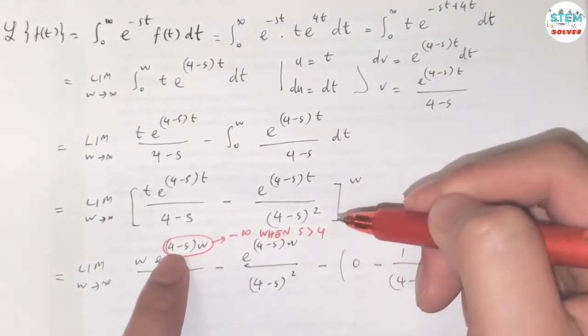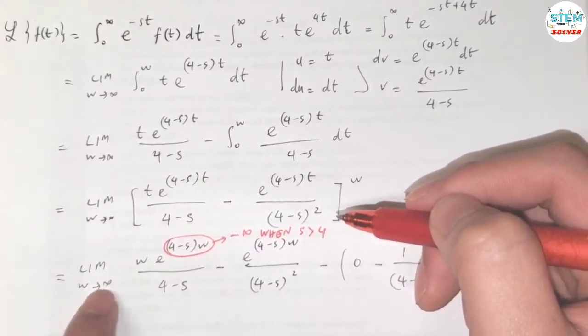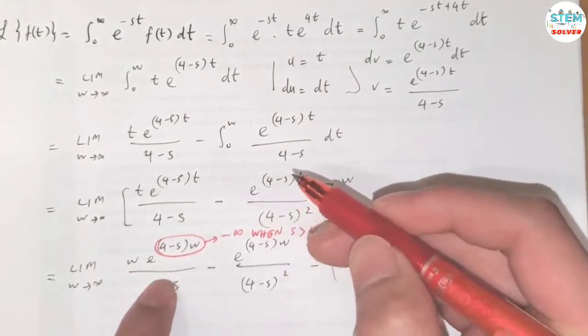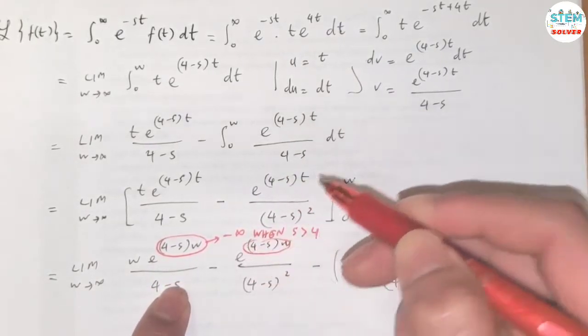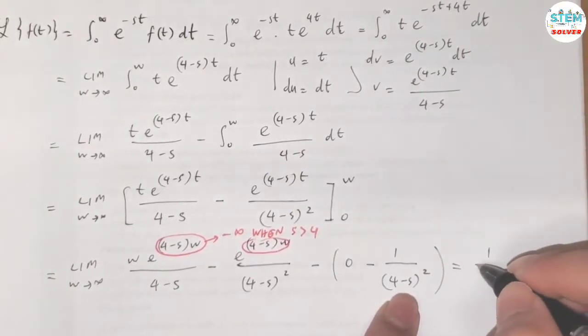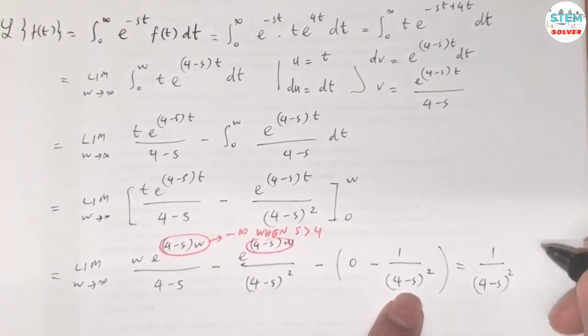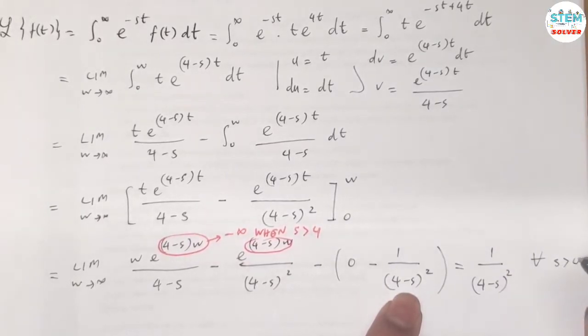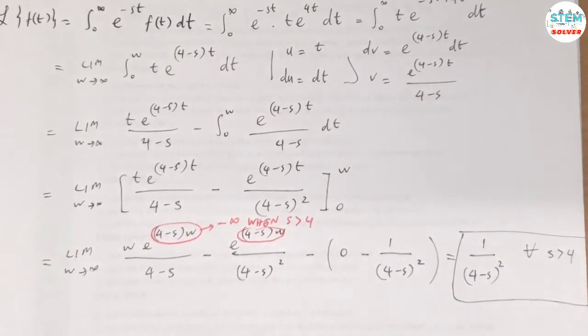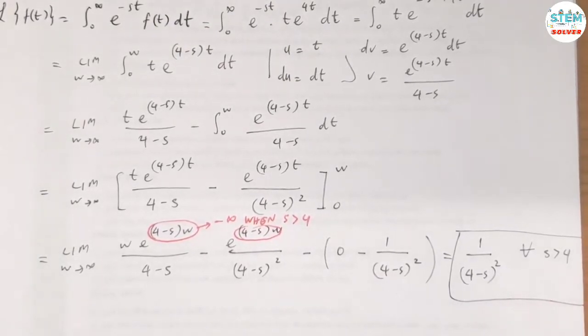So when s greater than 4, we have negative times w and w goes to infinity. So we have negative infinity and the limit of e to the negative infinity is 0. So it converges. Same for this one. Then our final answer is equal to 1 over 4 minus s squared. And this is valid for s greater than 4. So this is your final answer. That's it.